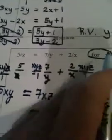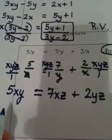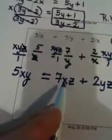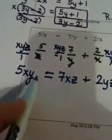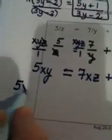Well, this has an x in it, this has an x in it, so I'm going to move this over to the other side of the equation by writing 5xy minus 7xz.